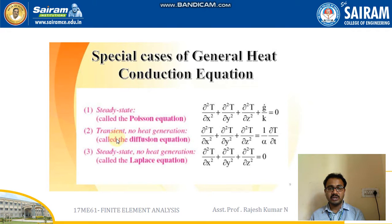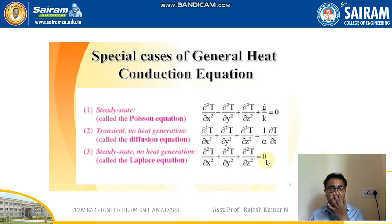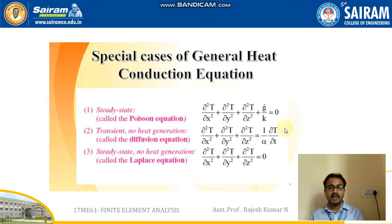The transient with no heat generation condition is also called the diffusion equation: ∂²T/∂x² + ∂²T/∂y² + ∂²T/∂z² = (1/α)·∂T/∂t, where α is the thermal diffusivity. The steady state with no heat generation is called the Laplace equation: ∂²T/∂x² + ∂²T/∂y² + ∂²T/∂z² = 0. In Poisson's and Laplace equations the sum equals zero, while in the diffusion equation it equals 1/α times the time derivative.